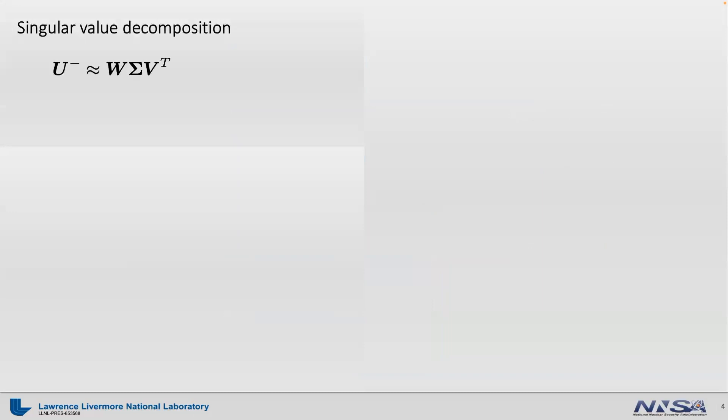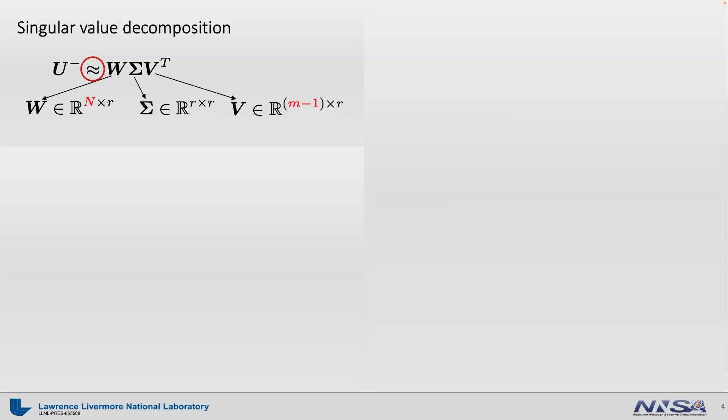To reduce the dimension, DMD applies a truncated singular value decomposition to the U-minus matrix, where W is an orthonormal matrix of size n by r. Here r is a small number such as 10 or 20. Sigma is a diagonal matrix holding all singular values. V is also an orthonormal matrix of size (m-1) by r, where m is the number of time steps. Note the approximation sign — this is a truncated SVD that effectively reduces the rank of U-minus to r.